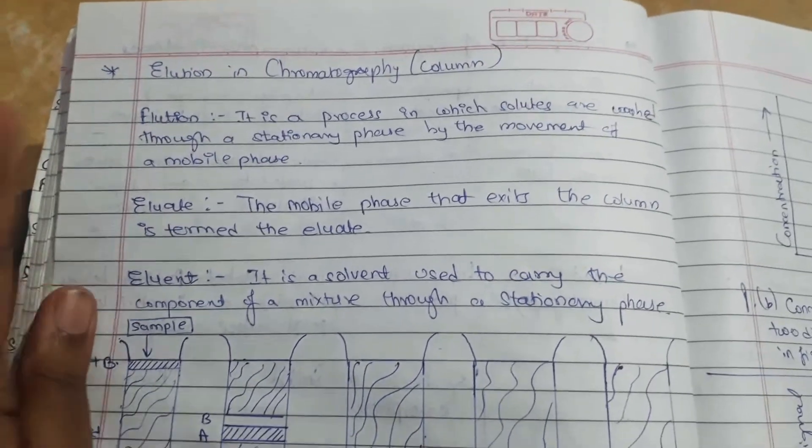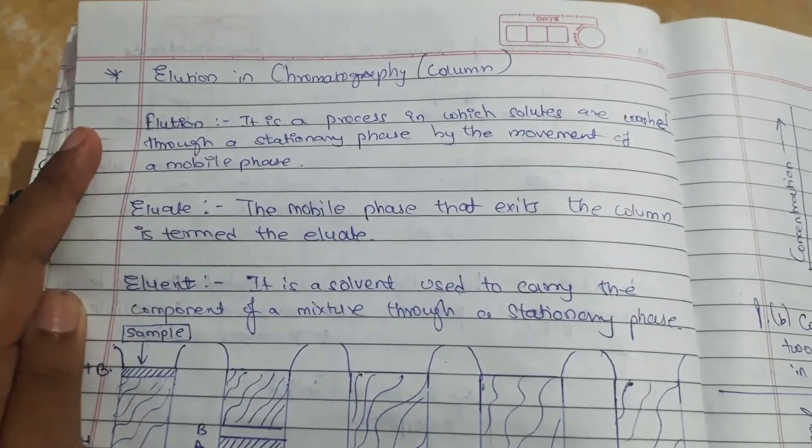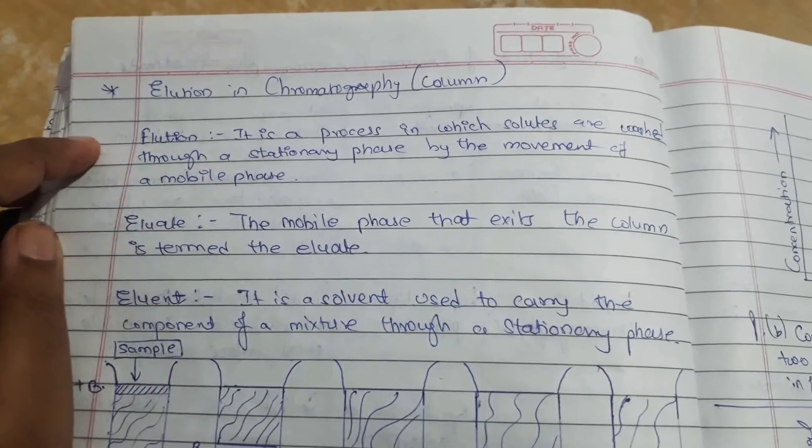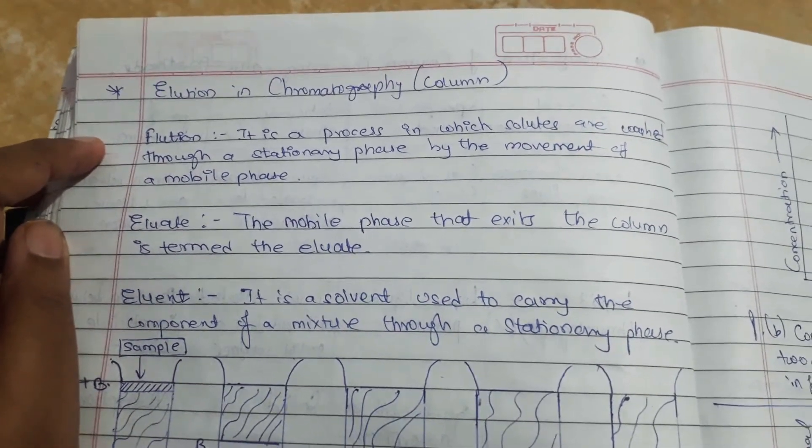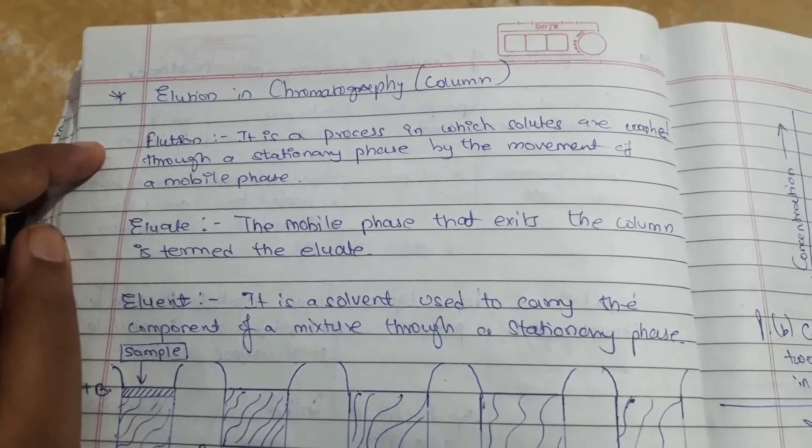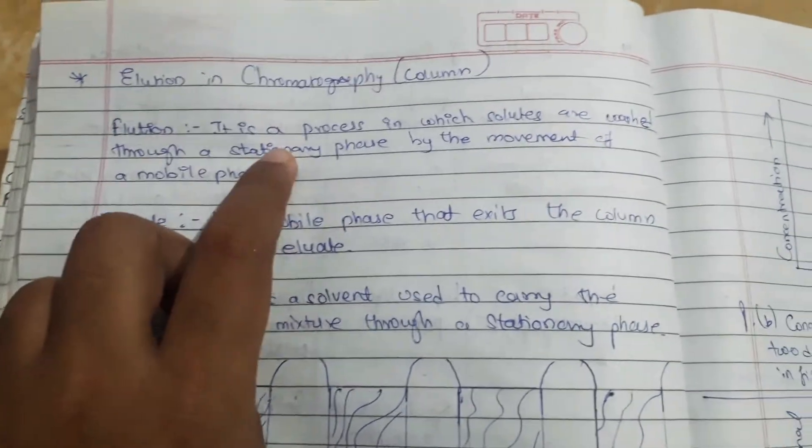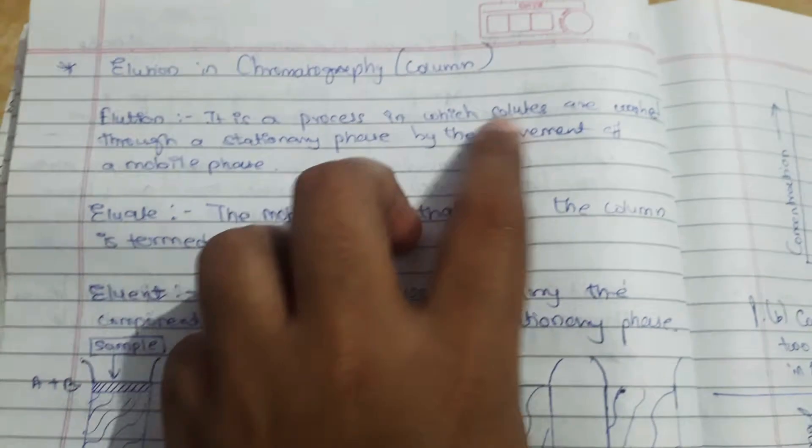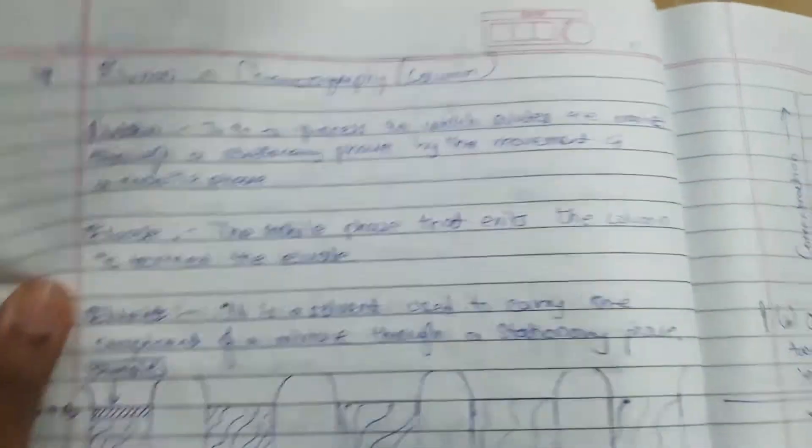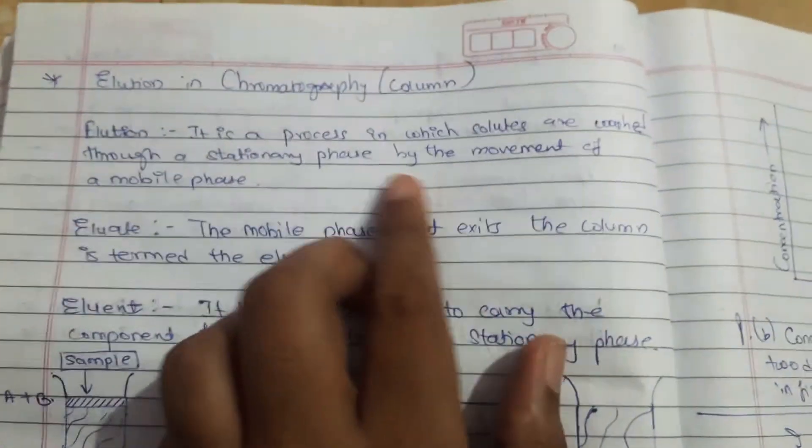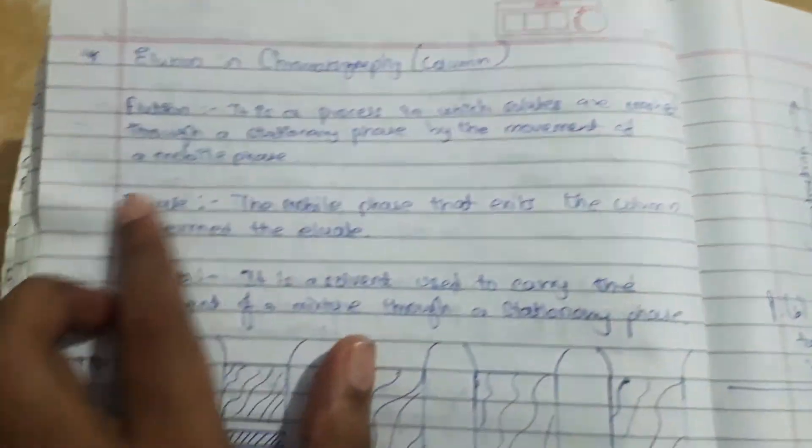Hello viewers, now I will explain about elution chromatography. In the last video I told you about the classification of column chromatography. Elution is a process in which solids are washed through a stationary phase by the movement of a mobile phase.